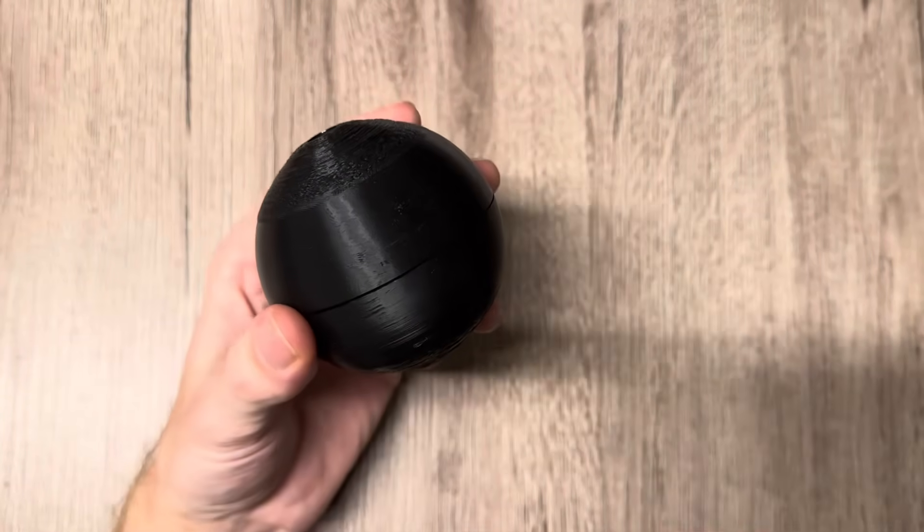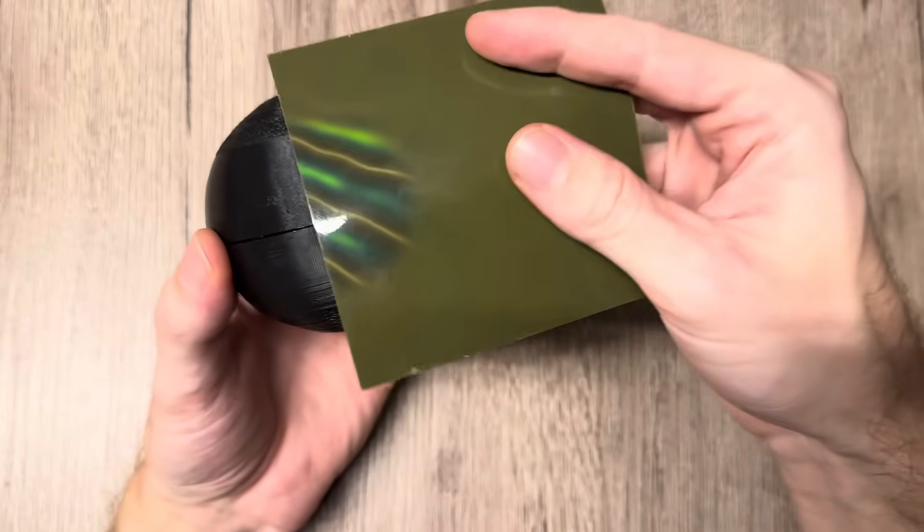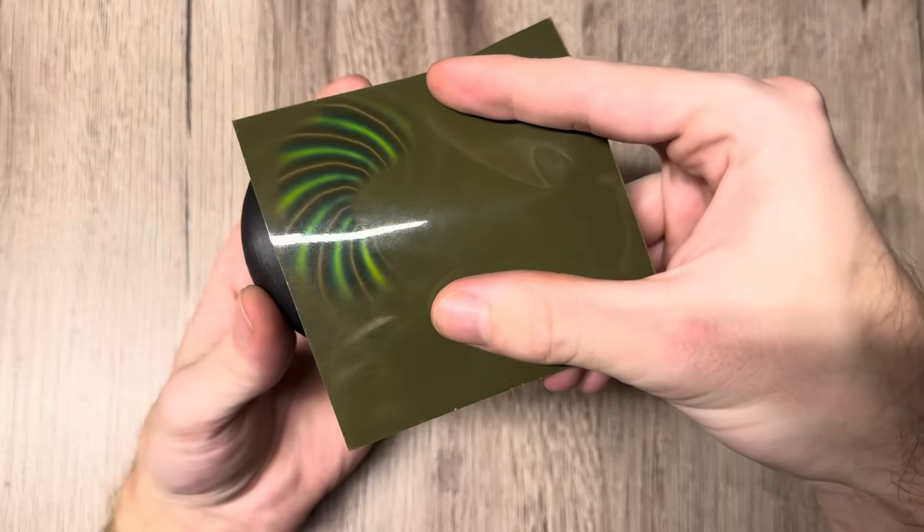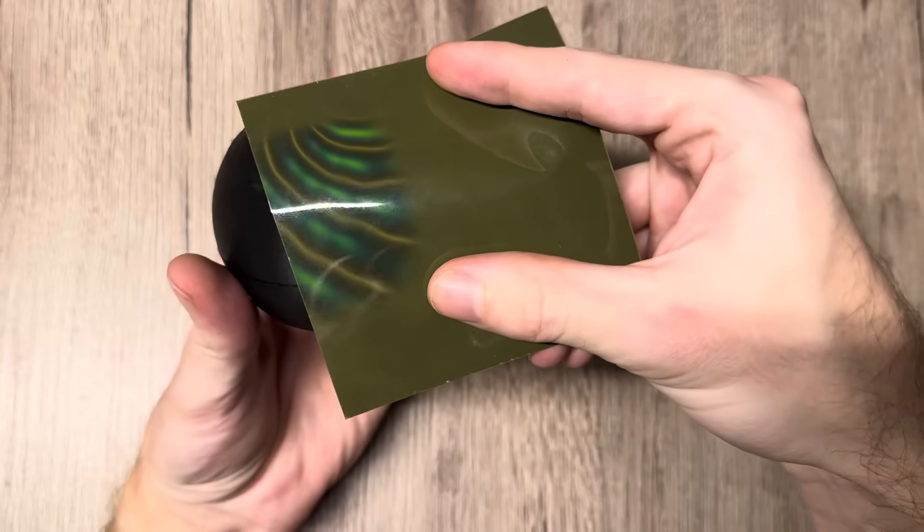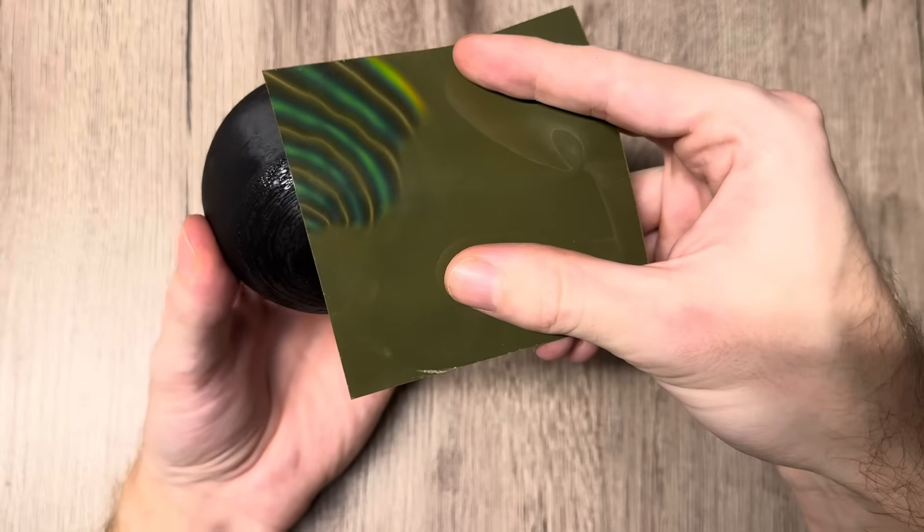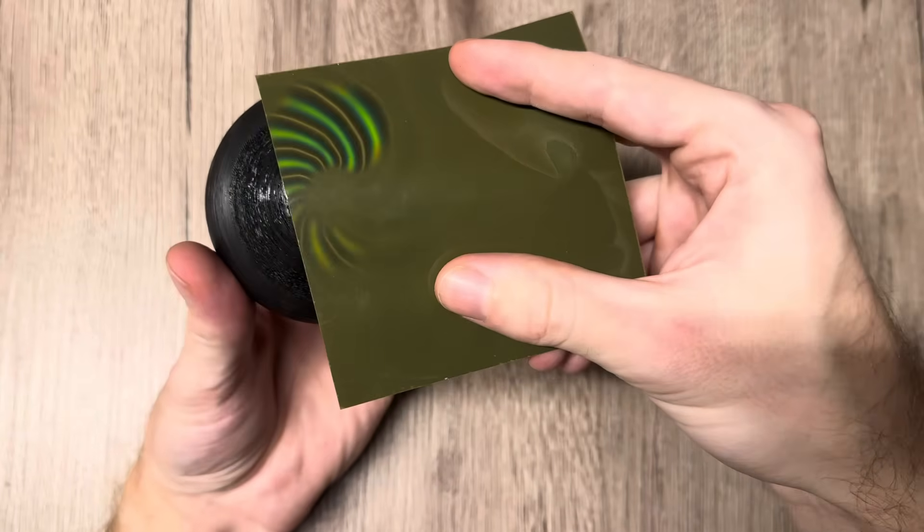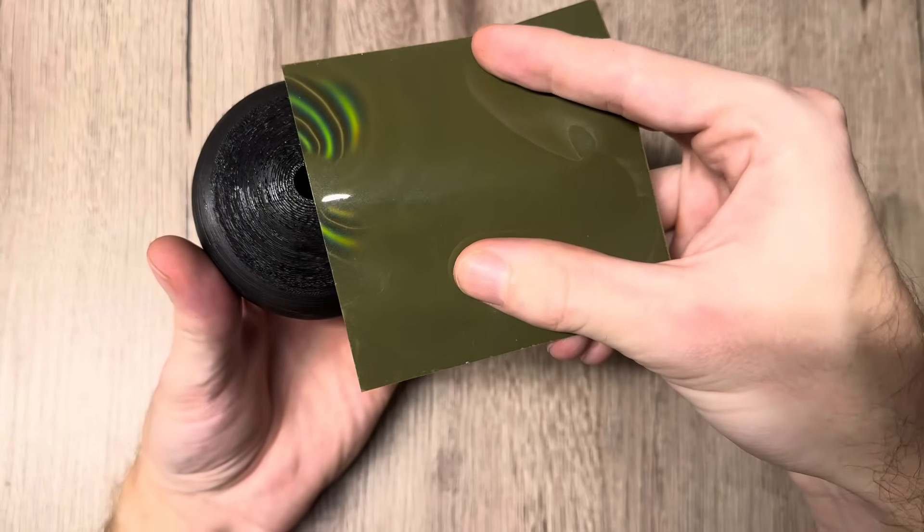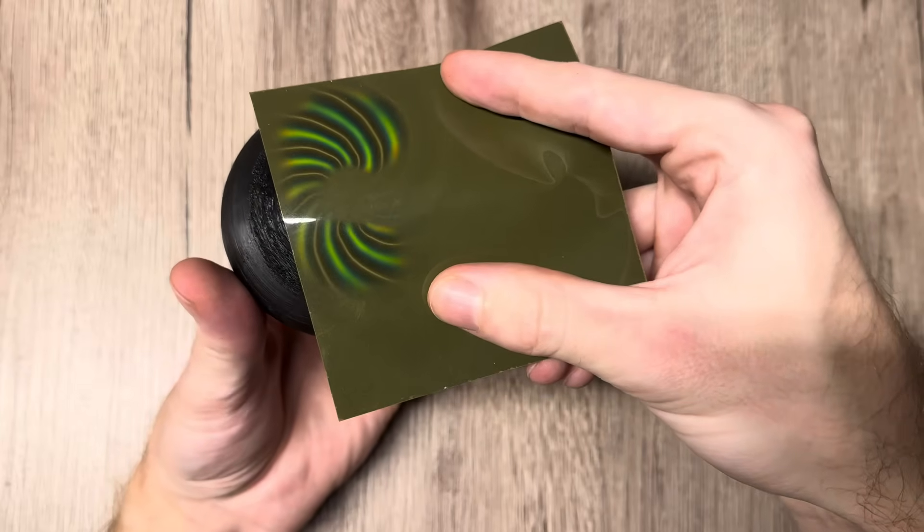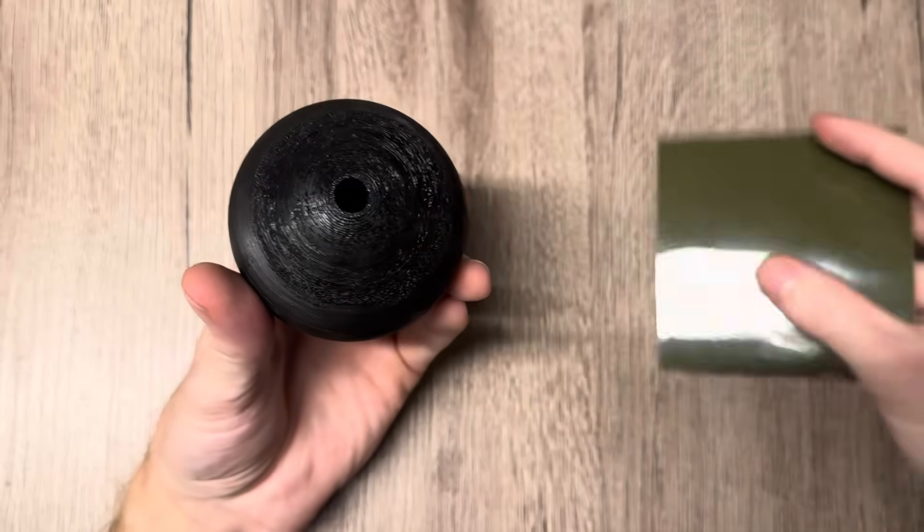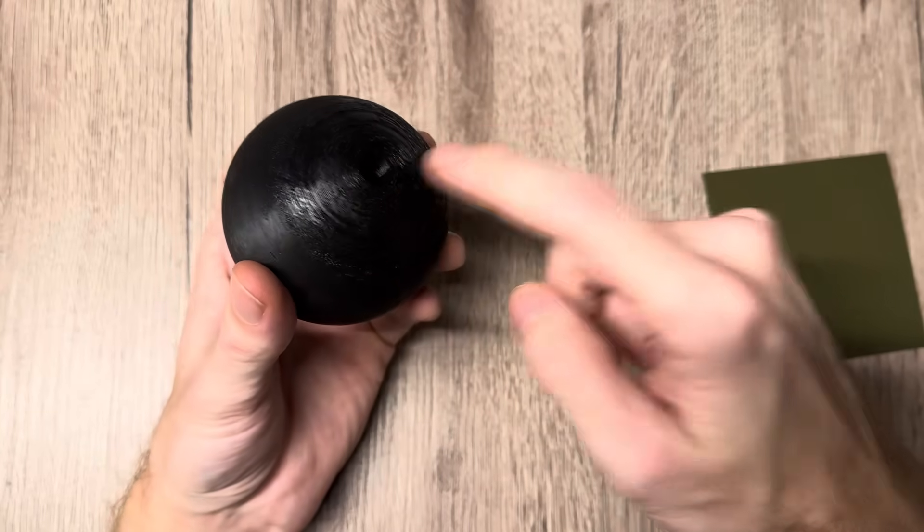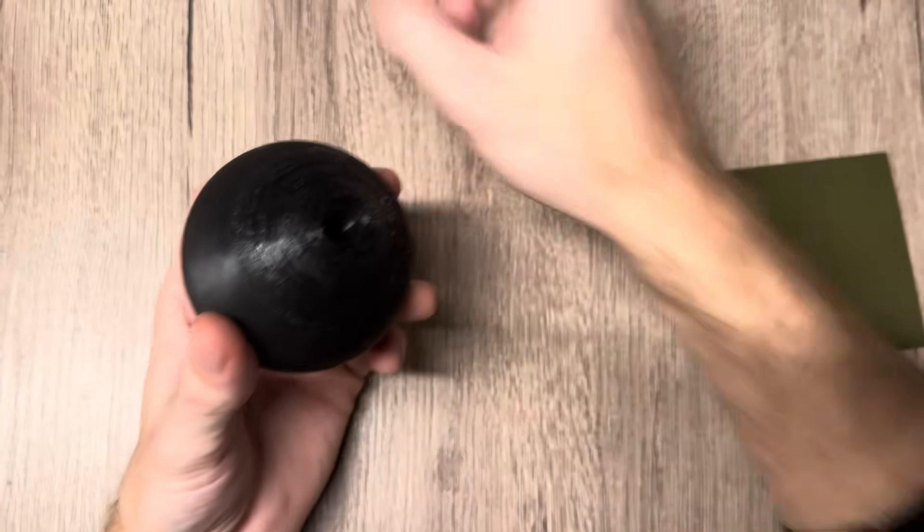I will now show you with the magnetic viewing film the overall field. As you can see, these spiral arms wrap around the entire sphere and also come in like this on the other side. On the center hole, as you can see here, there is no magnetic field at all, which is kind of interesting.